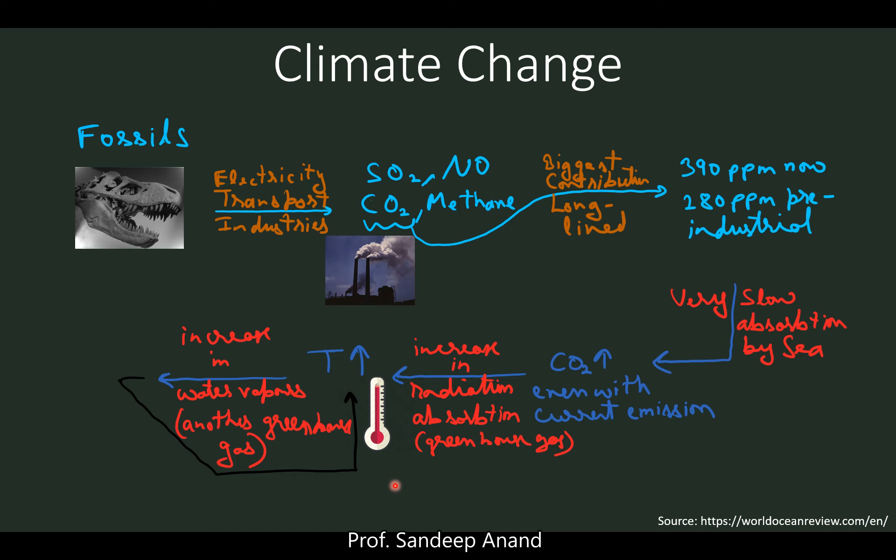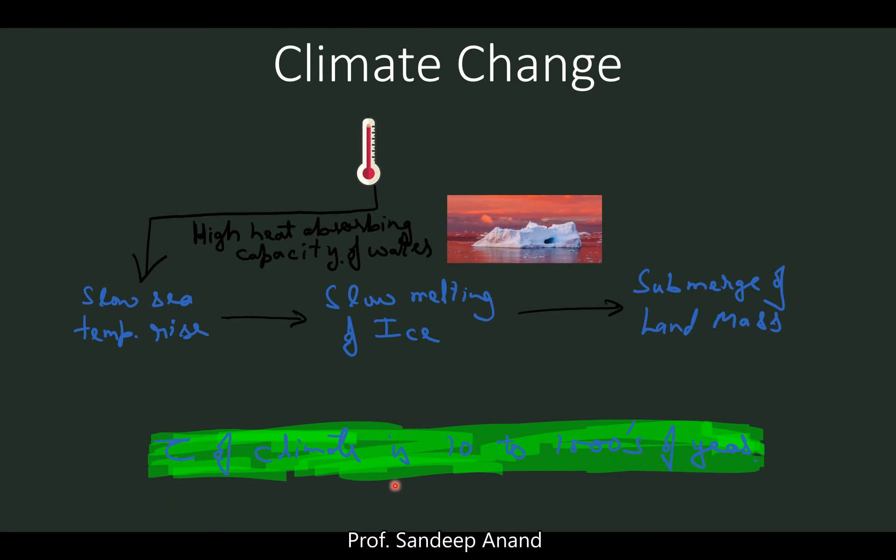As air temperature increases due to CO2, the temperature of water bodies including the sea also increases, though much more slowly due to water's large heat-absorbing capacity. This is why air temperature may change quickly while water temperature takes much longer. As water temperature rises, ice begins to melt — also a slow process — and as the ice melts, overall water levels increase, potentially submerging some land masses.